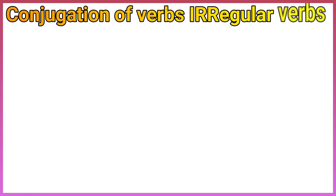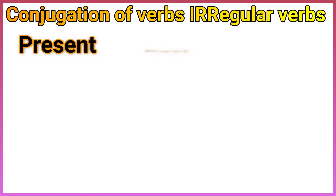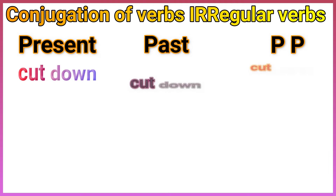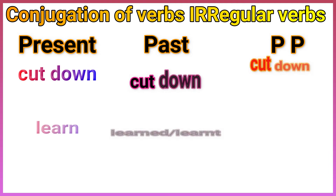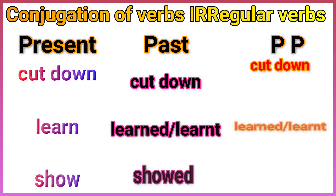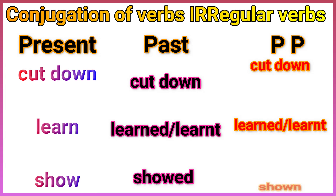Conjugation of verbs — Irregular verbs. Present, Past, Past Participle: Cut down / Cut down / Cut down. Learn / Learned (learnt) / Learned (learnt). Show / Showed / Shown.